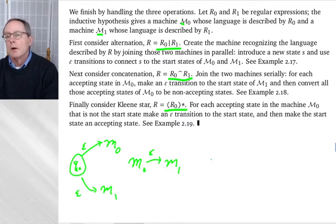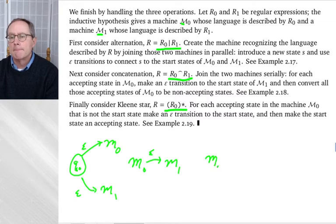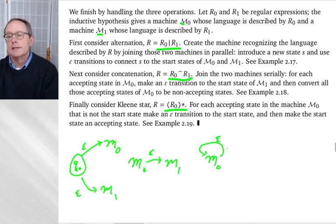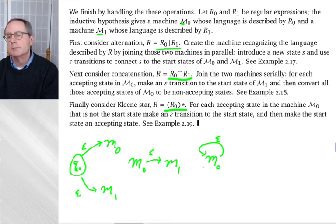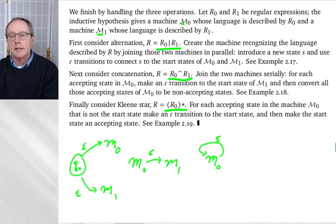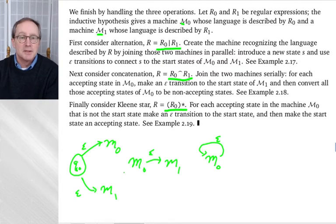For the star operator, you have a machine M0 and you make an epsilon transition back to itself — linking the final states to the initial state. You also change the initial state to be a final state, giving Q0 a double circle, because you need to accept the empty string. The big idea is that epsilon transitions solve all three of these construction problems — that's exactly why we introduced them.